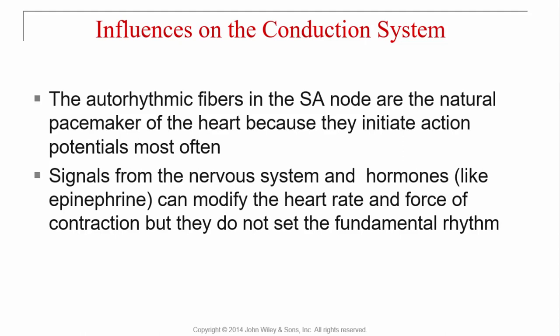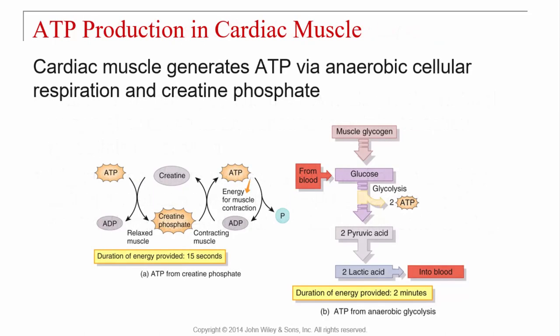Epinephrine, which you'd know as adrenaline, can increase heart rate. The sympathetic nervous system increases heart rate; parasympathetic innervation decreases heart rate. Think of sympathetic as fight-or-flight — if you're fighting for your life, your heart rate goes up. Parasympathetic is rest and digest — you're resting, so the heart rate is much slower.